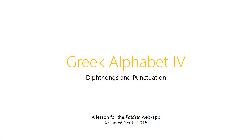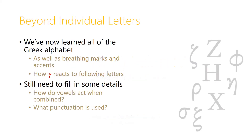Hi and welcome back. In this video we'll be looking at diphthongs and punctuation and how they affect our writing of Greek. We've already learned all the letters of the Greek alphabet, as well as talked about the breathing marks and accents, and we've learned how gamma reacts to some different letters when they follow it. We still need to fill in a few more details: how do vowels act when they're combined, and what punctuation is used when we're reading or writing Greek.